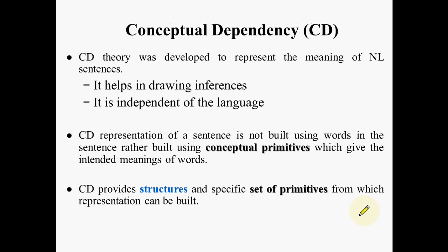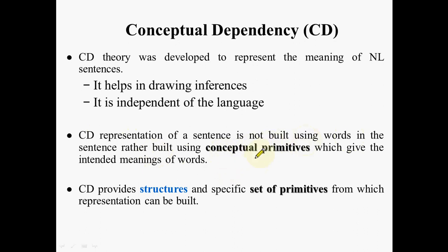Conceptual Dependency was developed to represent the meaning of natural language sentences. It helps in drawing inferences and is independent of the language — this is its most important advantage. In CD representation, a sentence is not built using words directly, because in English, words have different synonyms and different words can convey the same meaning. To avoid that ambiguity, CD representation uses something called conceptual primitives. CD provides structures and a set of primitives which can represent and build the sentence.